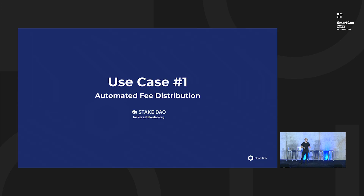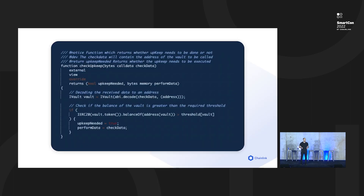I want to talk through a specific real-world use case from Stakedown. They're using Chainlink Automation today to automate fee distribution in their contract. Here's some quick code. You can see the checkUpkeep function — this is a checker function. This simulation happens every block for Chainlink Automation.